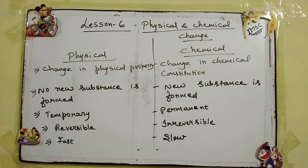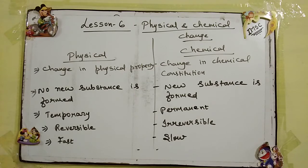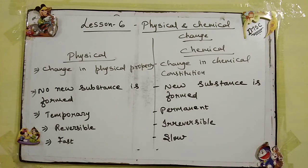Reversible मतलब suppose मैंने water से ice बनाया, means it is converted from liquid to solid. Similarly, when I keep it outside at room temperature, so again that ice gets converted into water — वो वापस अपने original form में convert हो सकता है. But in chemical change, it is irreversible — एक बार यदि दूध से दही बना दिया, तो दही को दूध में convert करना possible नहीं है. Also, physical change is a fast change, जबकि chemical change is a slow change.